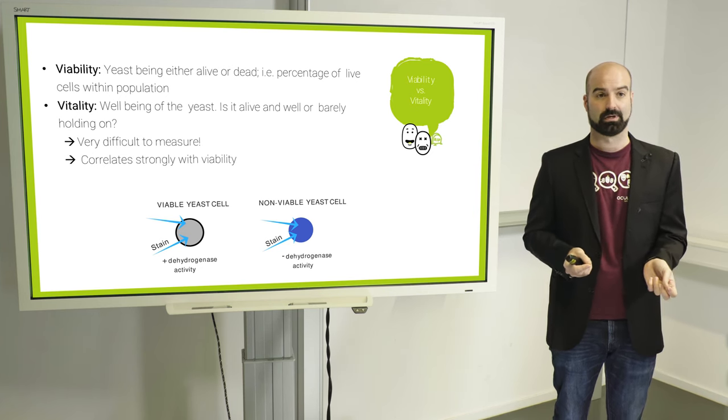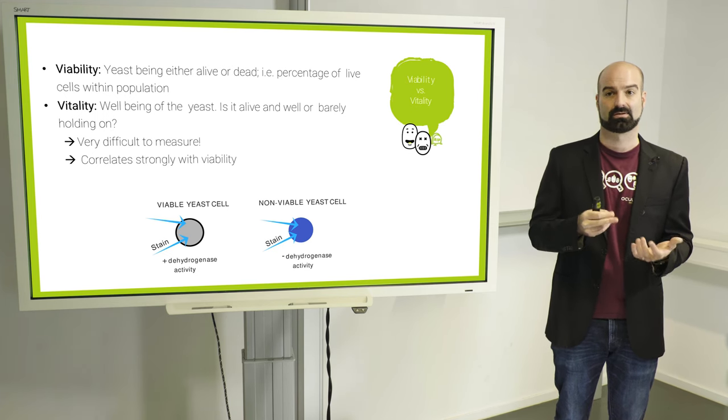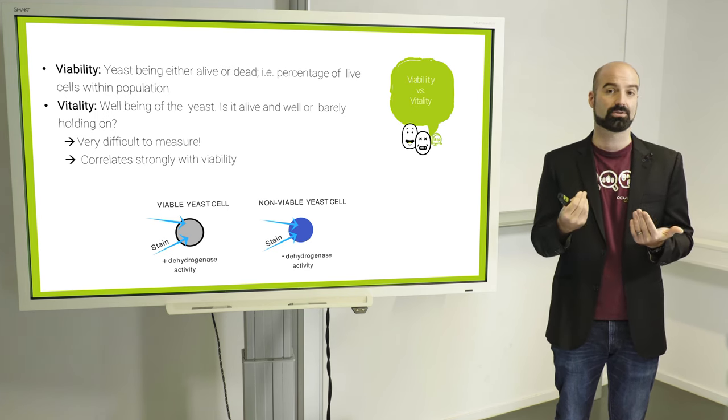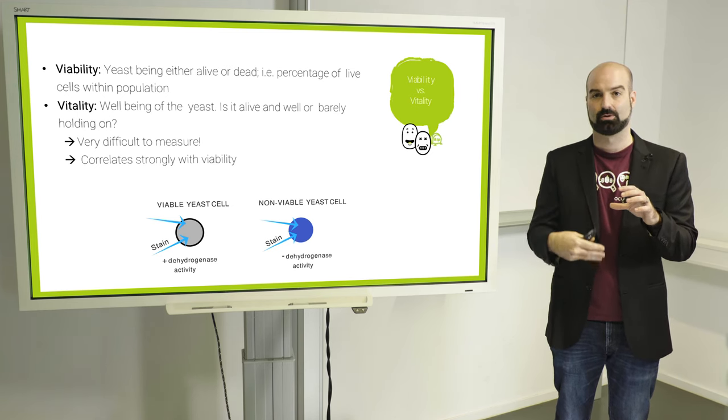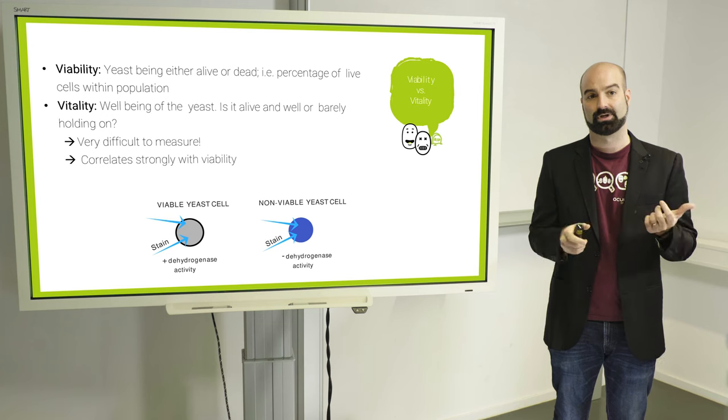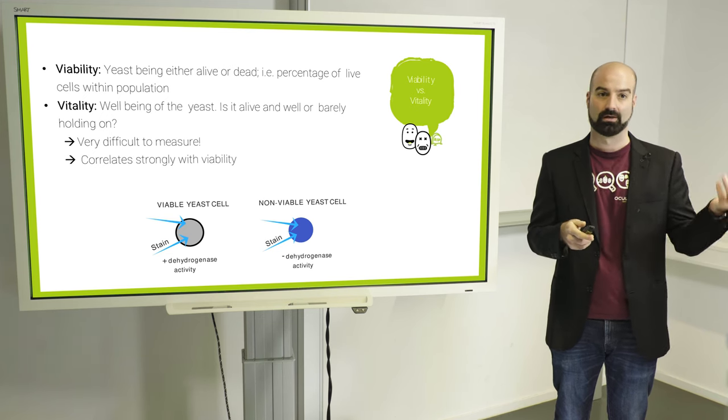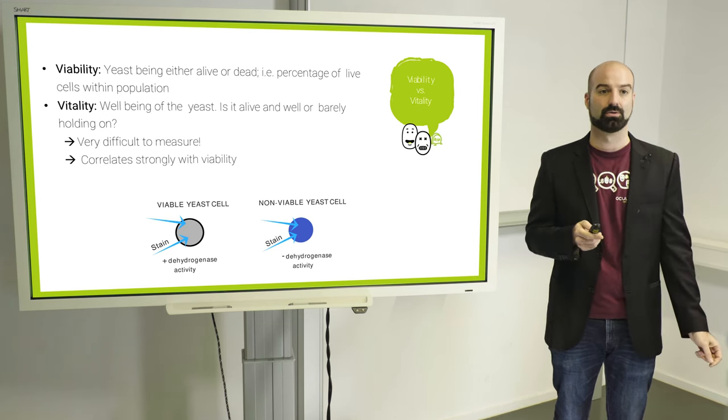Now, how do you measure viability? Typically, you use stains. These stains are like a coloring agent that enters the cell and the ones that are alive are able to metabolize it out, so they turn back transparent and the ones who are dead stay blue, violet or depending on what stain you use, a different color.